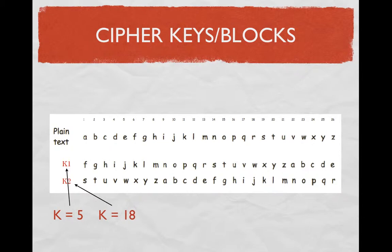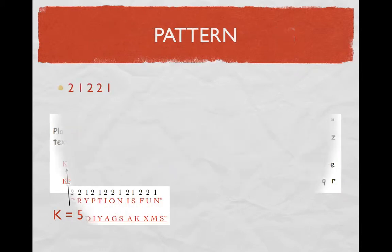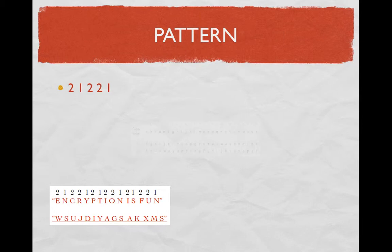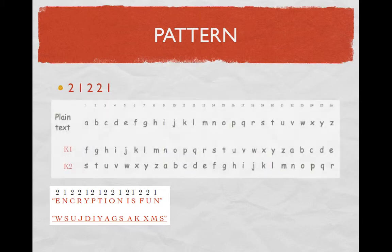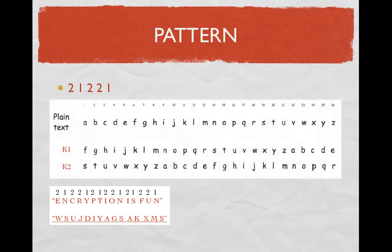Now onto choosing your pattern. The pattern is easy to determine. Since we have two cipher blocks, we are going to use the numbers 1, which is the first block, and the number 2, which is the second, to label our pattern.